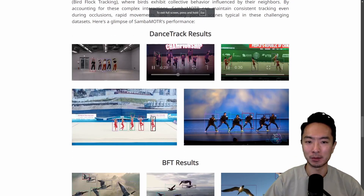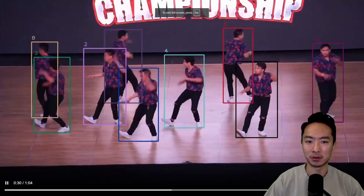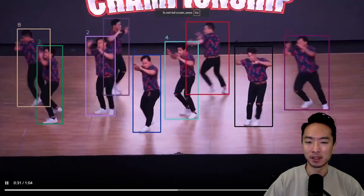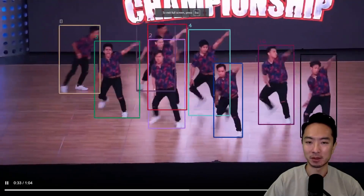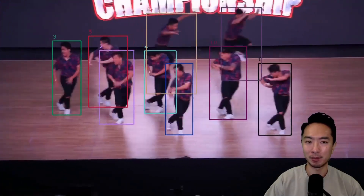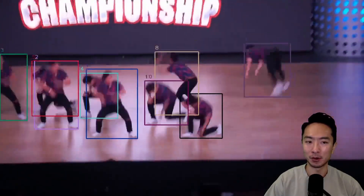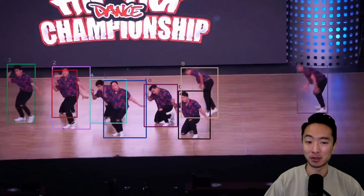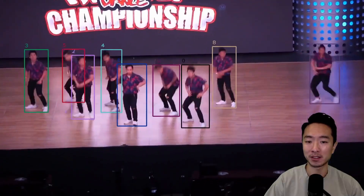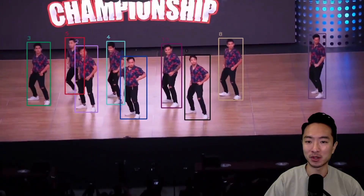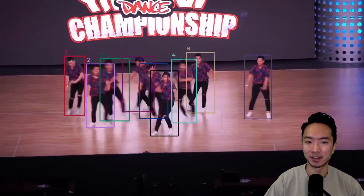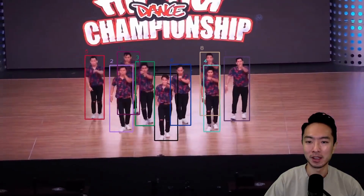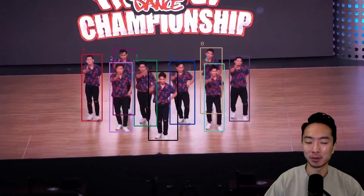Here are a few more examples. This one's another group of people. You can see there are people in the back passing back and forth, moving really fast, all dressed the same — and it can still detect the different people. Very impressive.